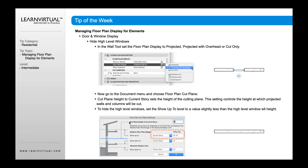We can also hide high-level windows — windows that are above us — by using projected with overhead. That could be a way to hide that cut by setting your cut above to show as a current story offset by nine feet eleven, which means it's now not going to show. These are different strategies we can use to show those windows at different heights.